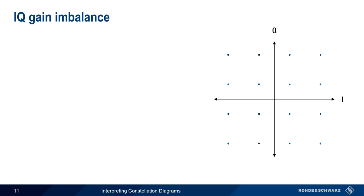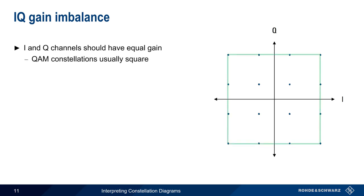The first IQ problem we'll look at is IQ gain imbalance. Ideally, the I and Q channels should have equal gain, and this gives most QAM constellations their characteristic square shape.